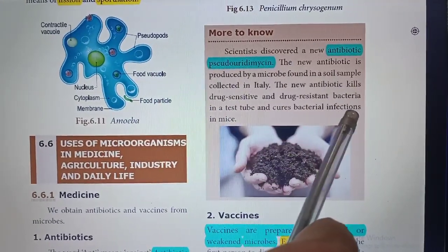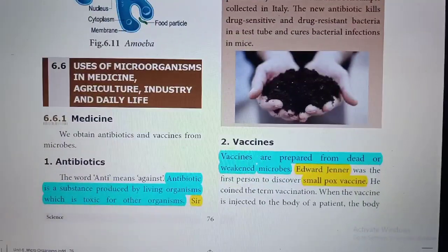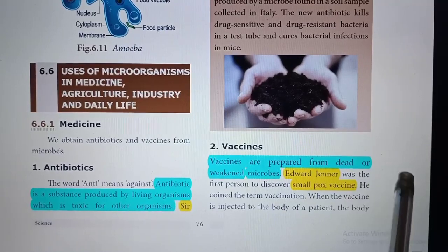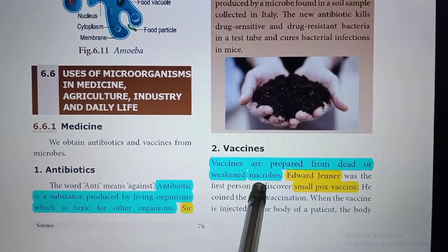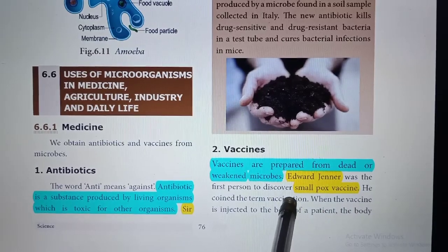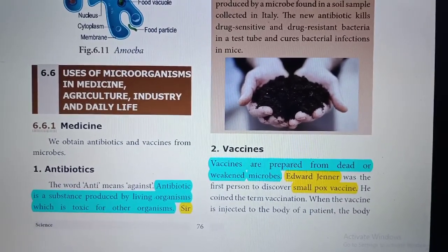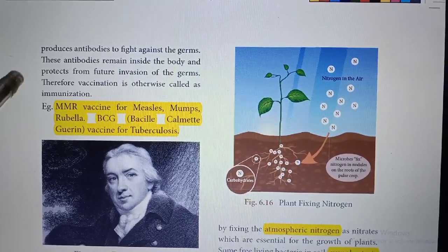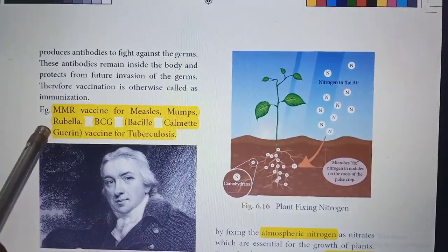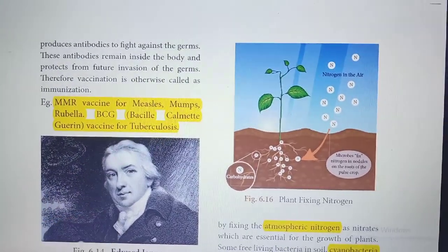What are vaccines? Vaccines are prepared from dead or weakened organisms. Vaccines were first discovered by Edward Jenner and the first vaccine is the smallpox vaccine. The MMR vaccine is given for measles, mumps, and rubella. The BCG vaccine is for tuberculosis.